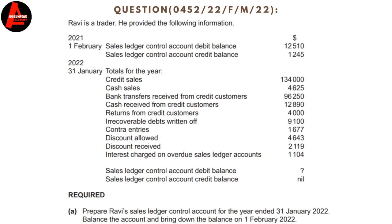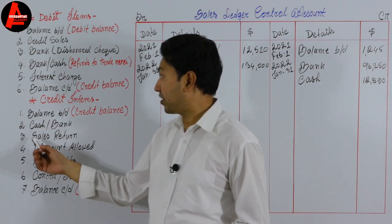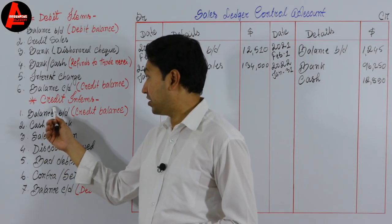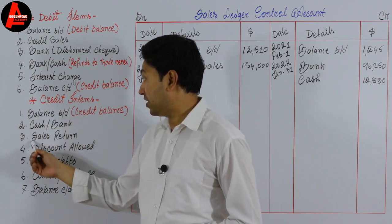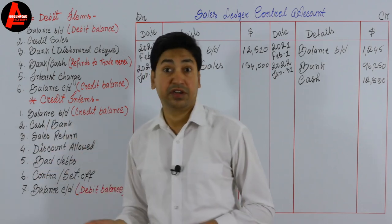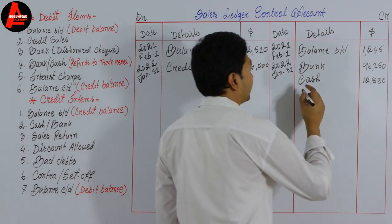Returns from credit customers is $4,000. This is a sales return, and sales returns are recorded on the credit side — they are credit items. Don't be confused. We write sales return: $4,000.